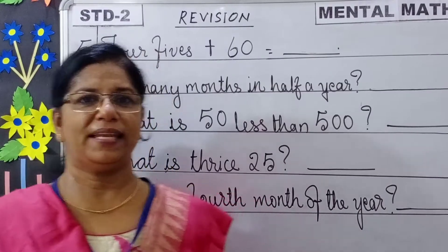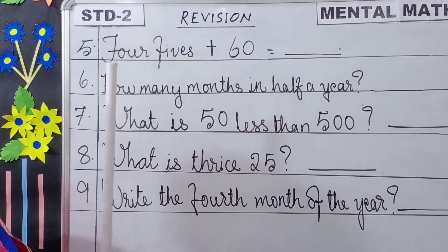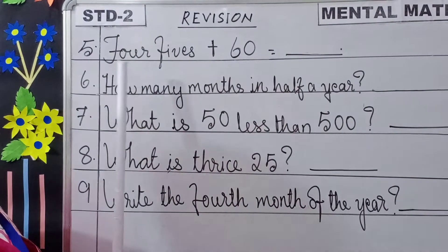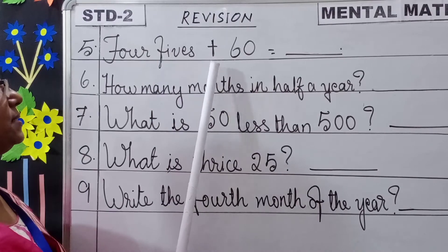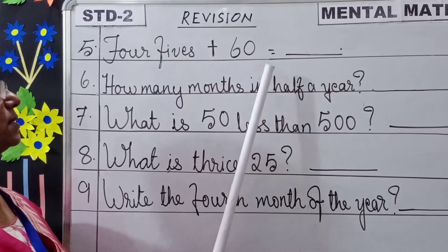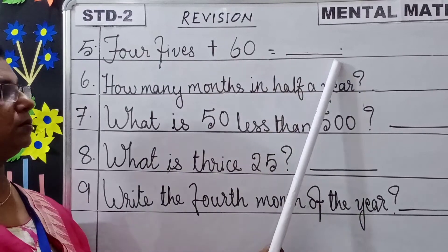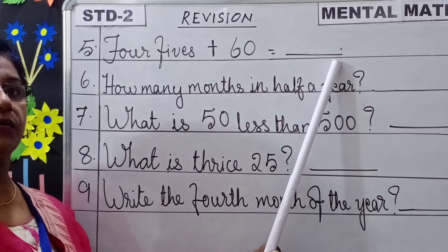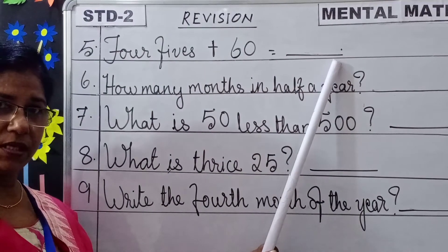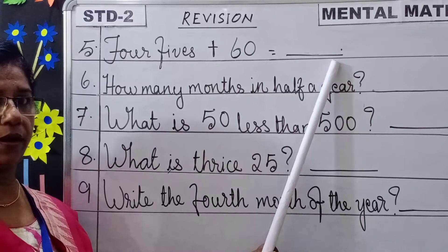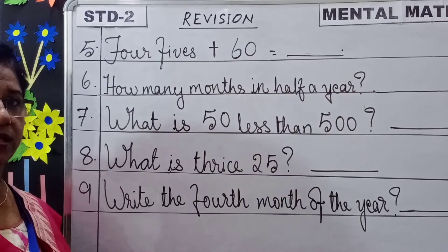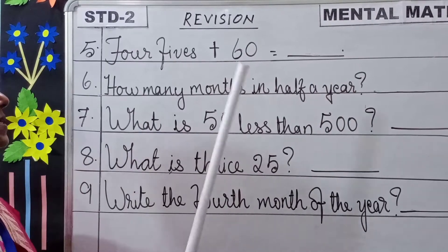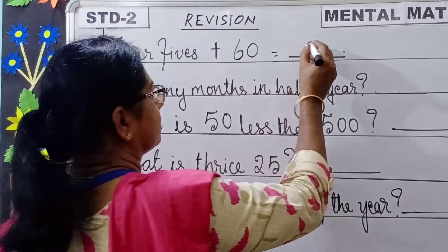Moving to the next one. Question number 5: 4 fives plus 60 is equal to dash. 4 fives means 4 into 5. 4 fives are 20. 20 plus 60 equals 80.